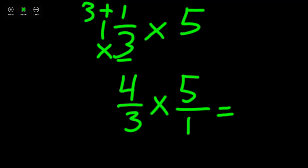Now that we have 2 improper fractions, we can multiply our numerators across to get our numerator. 5 times 4 is 20 and we can multiply across our denominators to get our denominator. 3 times 1 is 3. Now we have 20 over 3.